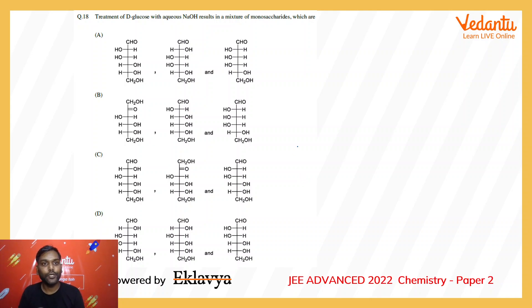The last question is from biomolecules. Treatment of D-glucose with aqueous NaOH results in a mixture of monosaccharides which are... If you draw the structure of D-glucose: CH2OH, HOH, HOH, HOH, and CHO. In alkaline medium it will get tautomerized into enediol which uses this hydrogen of alpha carbon and the rest of the part remains as it is.